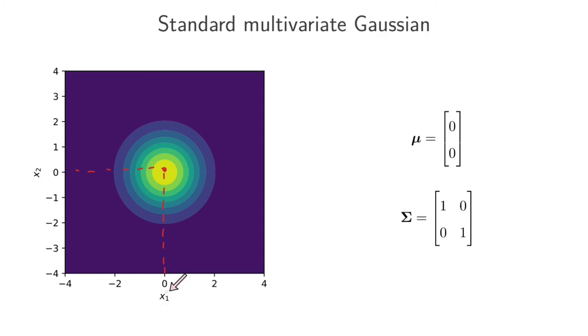And in this case both x1 and x2 have a variance of 1 and they're uncorrelated. They don't tell us anything about one another. I don't know anything about x2 irrespective of where x1 lands and vice versa.